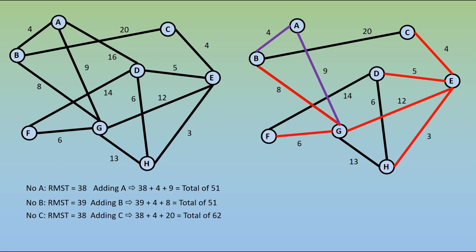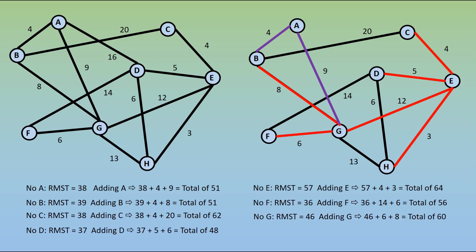For node C, we have a total of 62. For node D, a total of 48. No E, a total of 64. No F, a total of 56. No G, a total of 60. And no H, a total of 48.